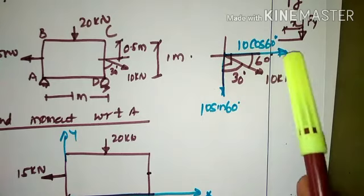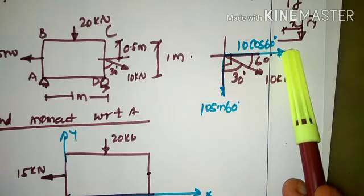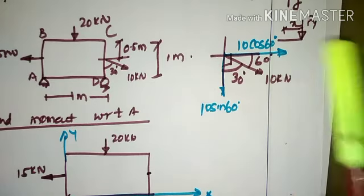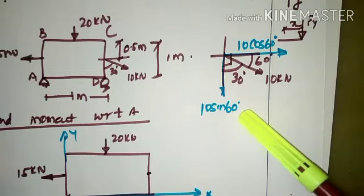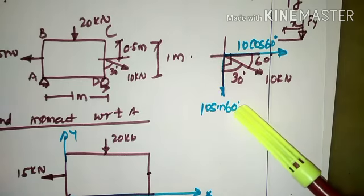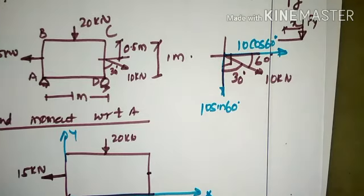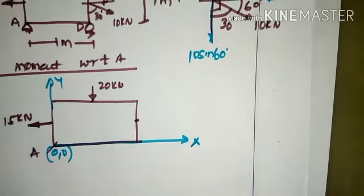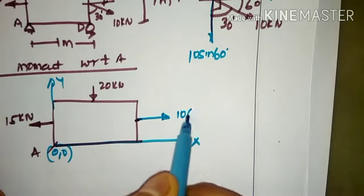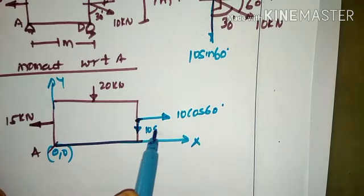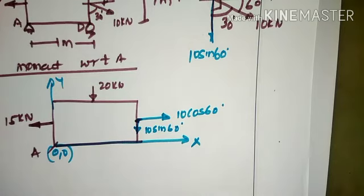For the x-component force, we multiply the y-coordinate. For 10 sin 60, which is a vertical y-component force, we multiply the x-coordinate. Marking these on the free body diagram, we have the horizontal component as 10 cos 60 and the vertical component as 10 sin 60. This ensures all forces on the lamina are either parallel to y or parallel to x, making the moment computation easy.